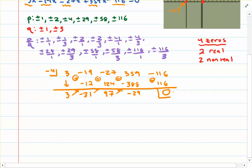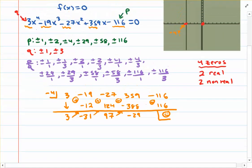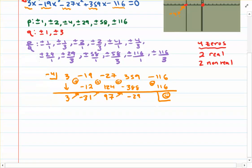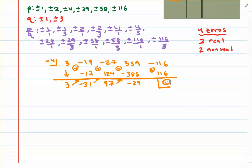Thank goodness that worked out — we get a remainder of zero. This verifies that negative four is a real zero, so it's one of the answers. The coefficients from the bottom row give way to a degree-three polynomial. Once you make the factor out of the negative four, the second factor is going to be 3x cubed minus 31x squared plus 97x minus 29, which we want to break down even further.